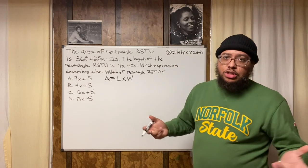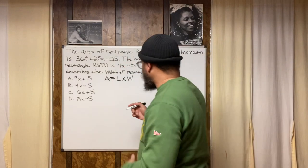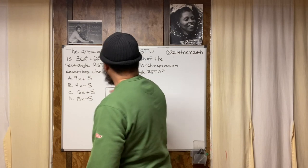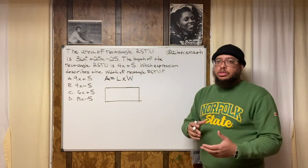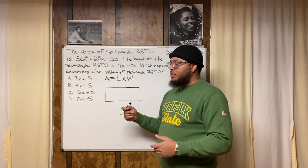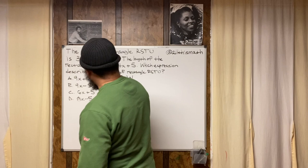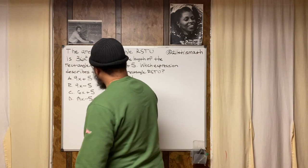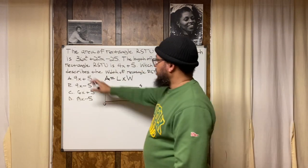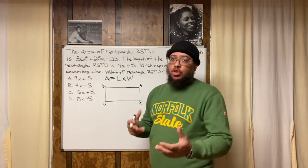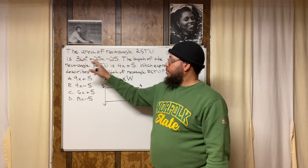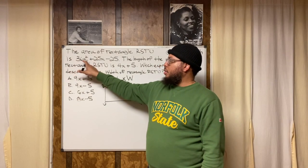I like to draw a picture so I can visualize this. I'll draw a rectangle — it's called RSTU because those are the vertices. R, S, T, U — each letter represents one of the four vertices. Now the area is this trinomial: a trinomial is a polynomial with three terms.